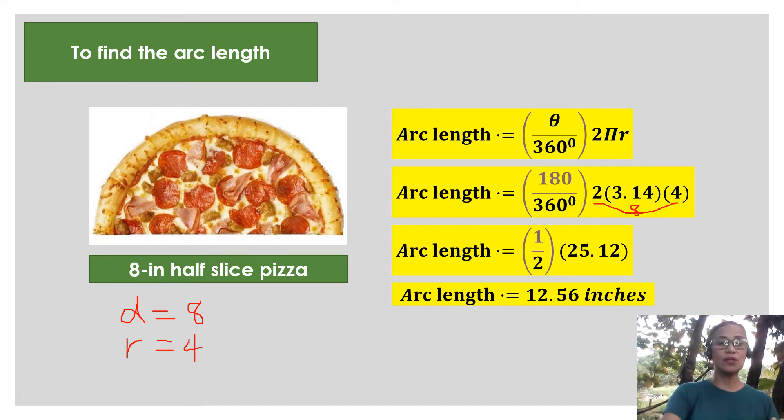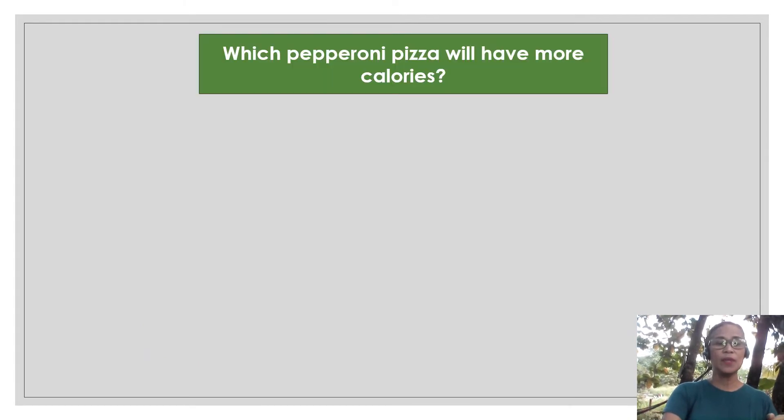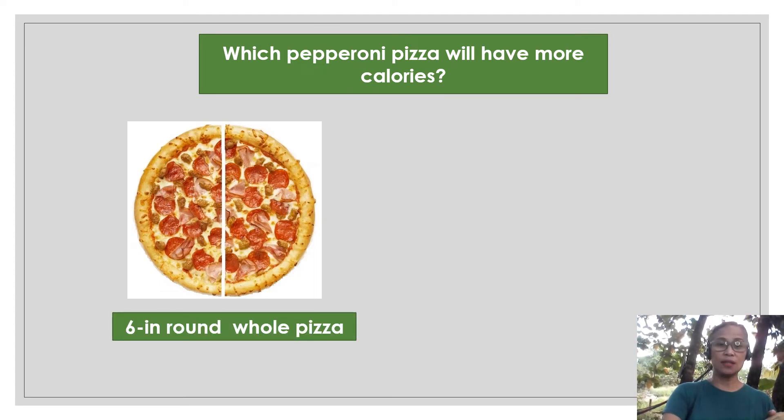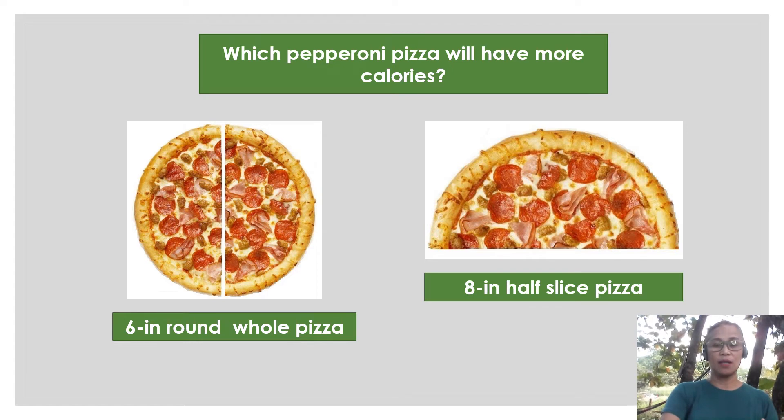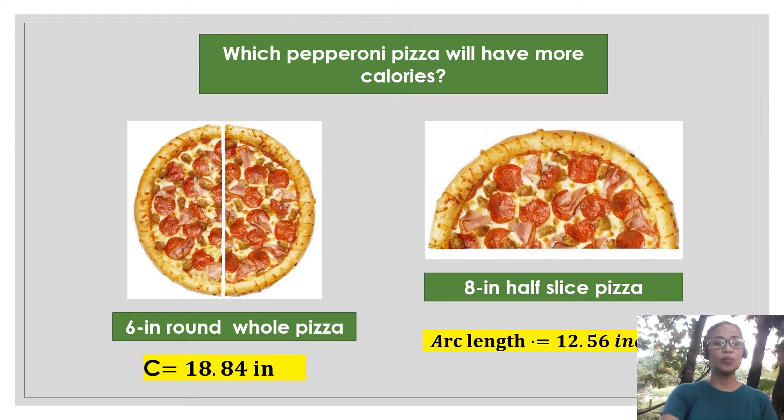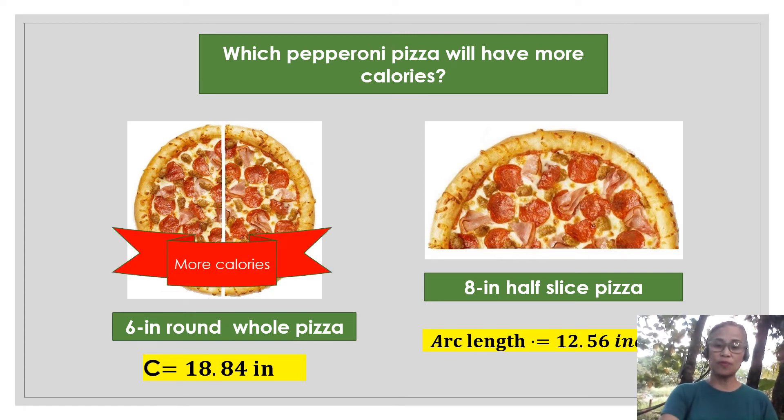Now we can now accurately answer the question in the problem. So which pizza will have more calories? Is it the whole pizza or the half slice pizza? Remember the half slice pizza? It has an arc length of 12.56 inches. And the whole pizza has a circumference of 18.84 inches. So therefore, we can confidently say that the whole pizza has more calories.